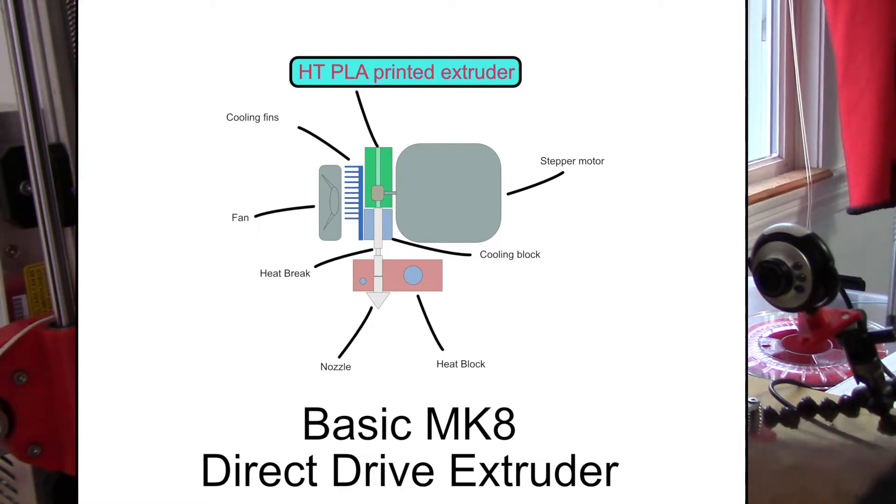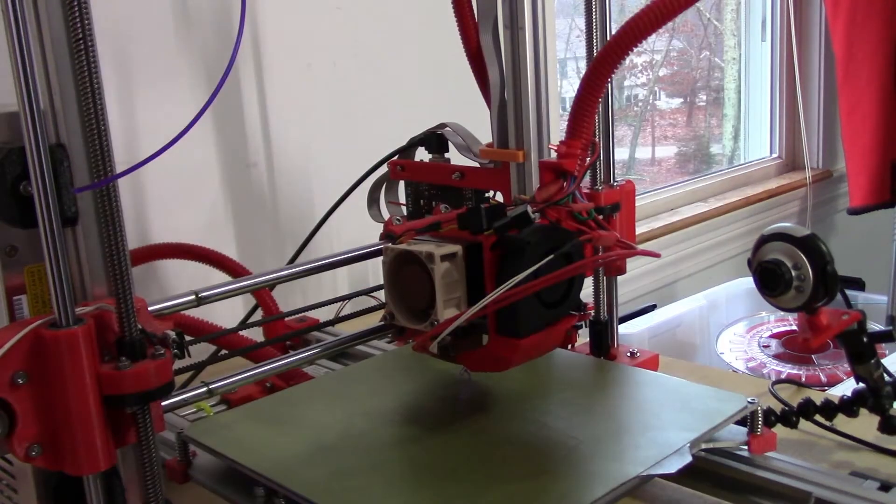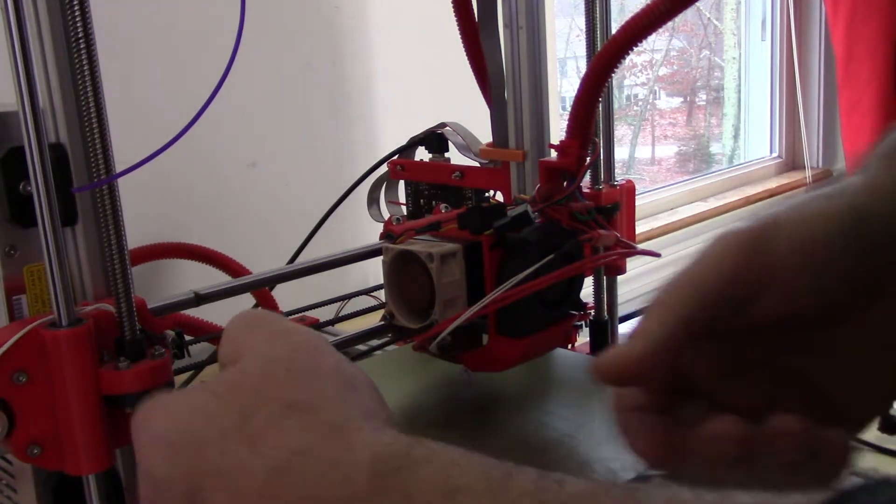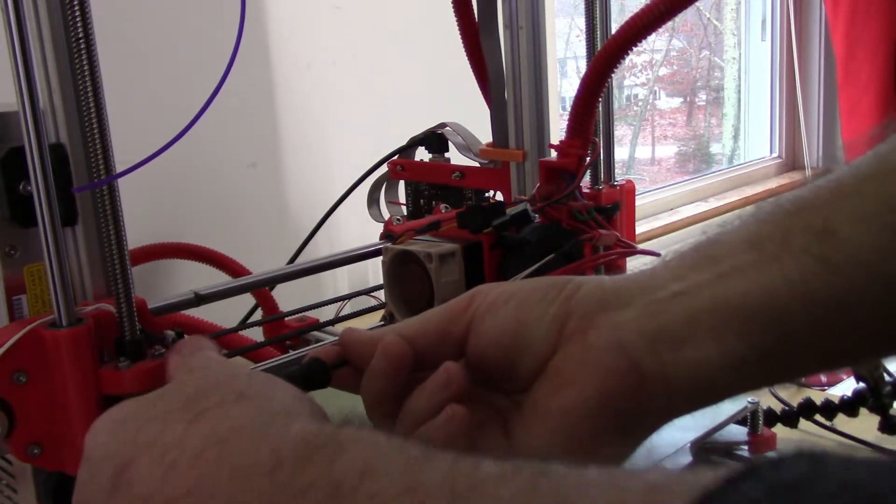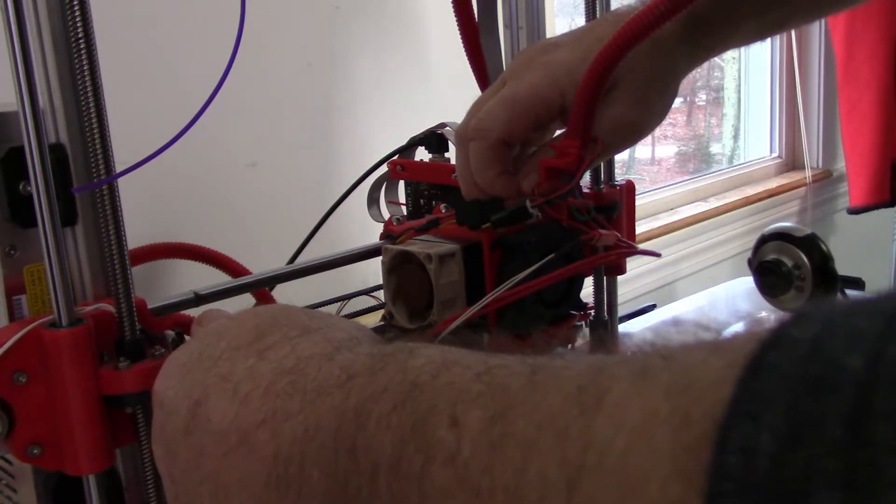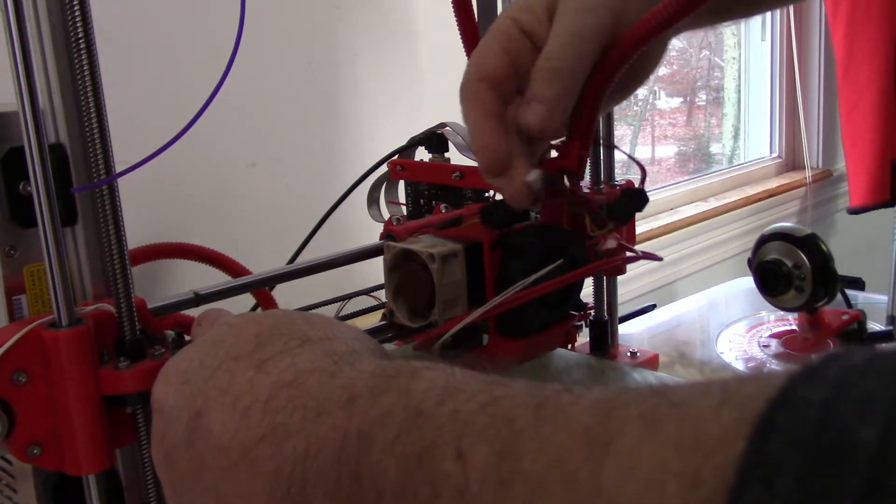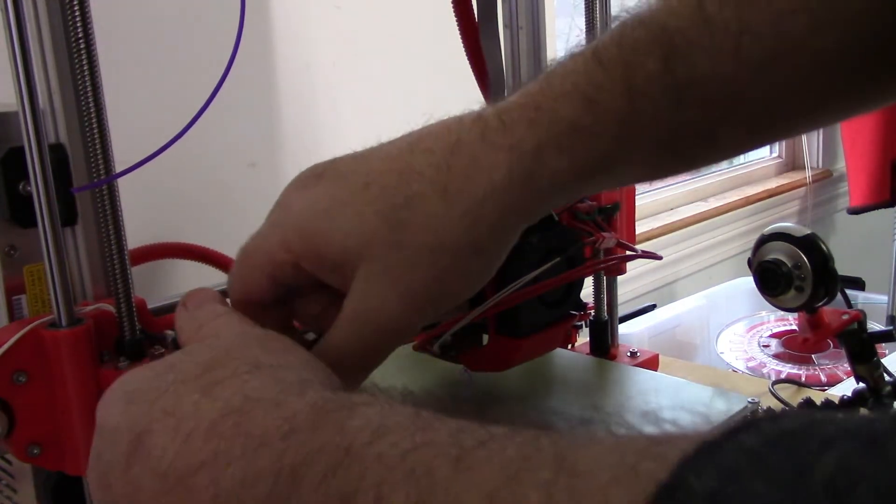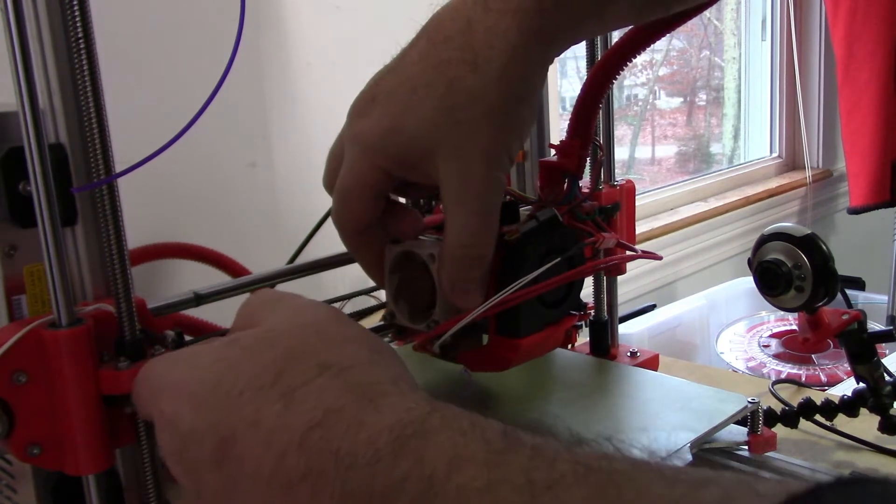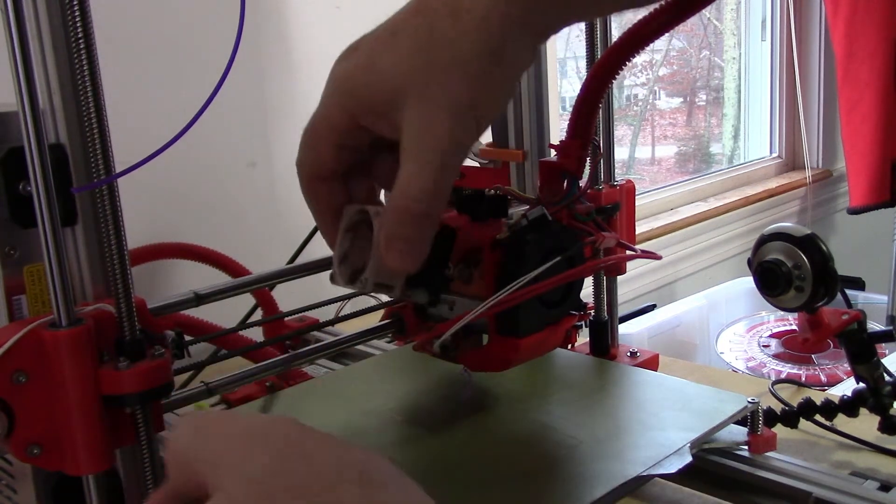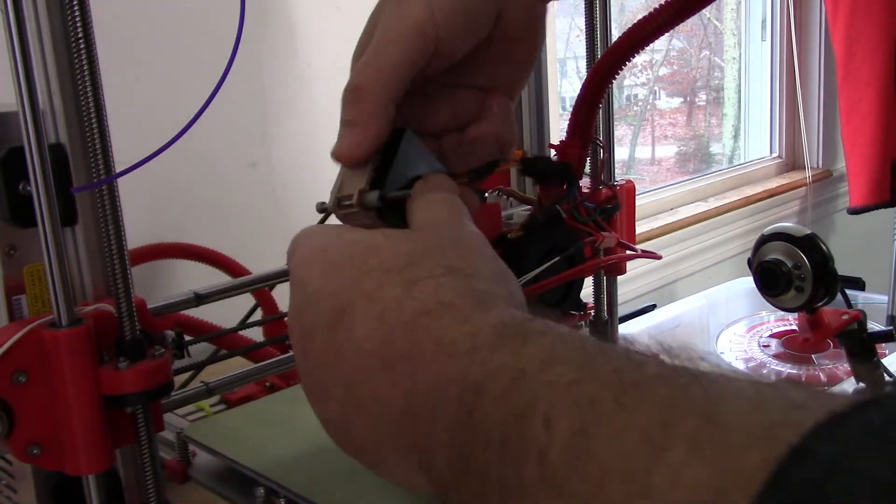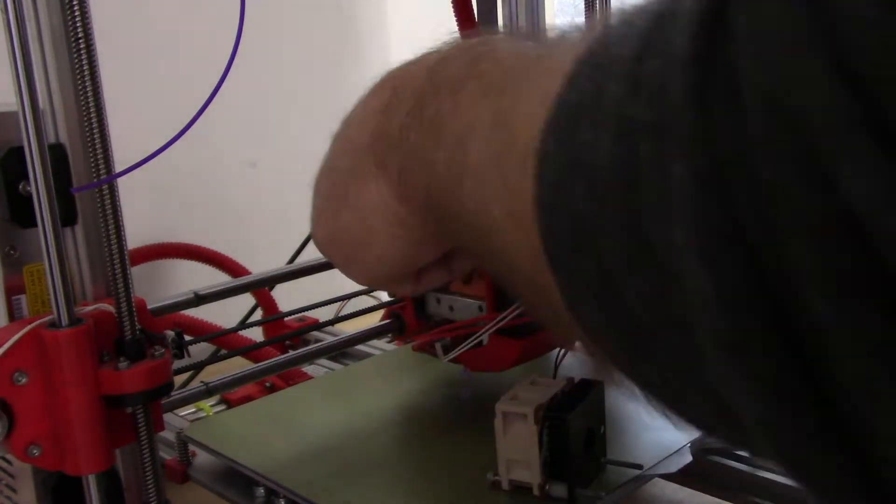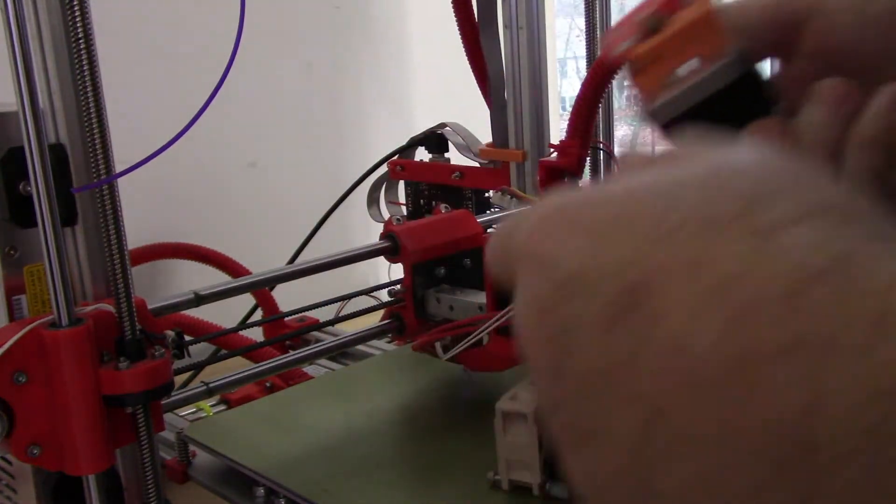I'm actually going to kill the power to it now. It's all warm because I actually have to clean the nozzle tube. But the fan here, the heat sink, and the stepper motor all trap the heat sink thing in place. That's your heat sink, your motor, and extruder.